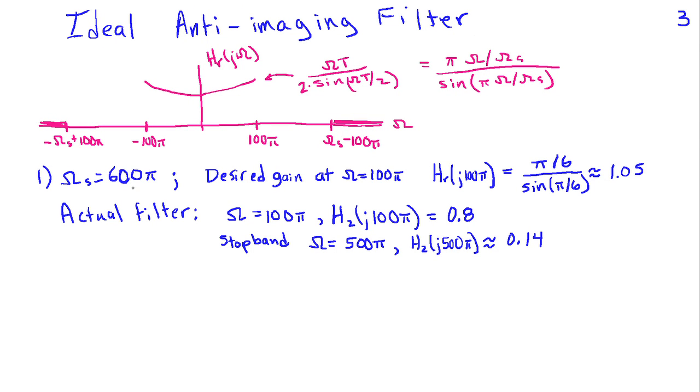We can see how well this simple second-order filter meets these constraints. First, we'll consider the case where we have a sampling frequency of 300 Hz or 600π radians per second. The desired gain at the band edge is at 100π. We can apply 100π into this expression for our desired filter, and we find that it's π/6 divided by sin(π/6), and that comes out to be about 1.05.